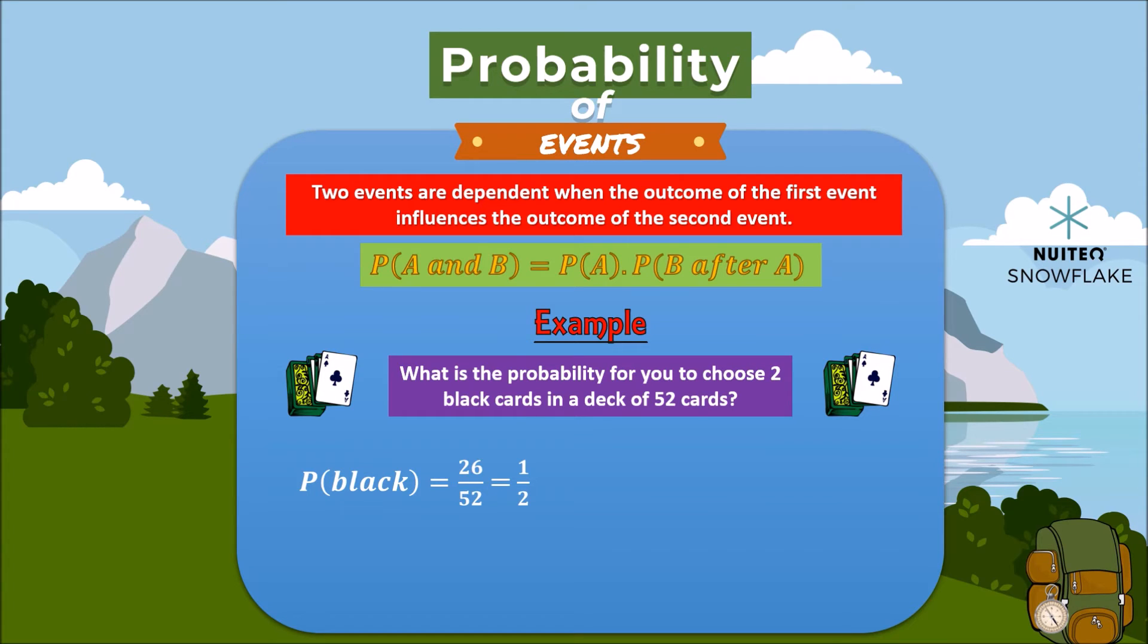Then, the probability of choosing a second black card from the deck is now 25 over 51. So, the probability of choosing two black cards will be the result of multiplying a half and 25 over 51, that is 25 over 102. Interesting right?